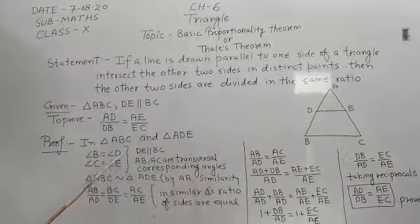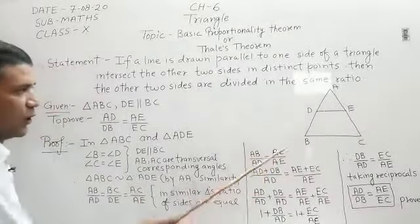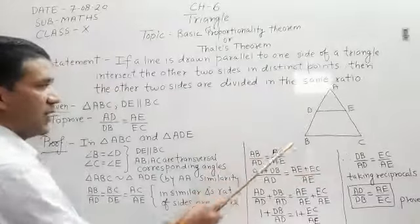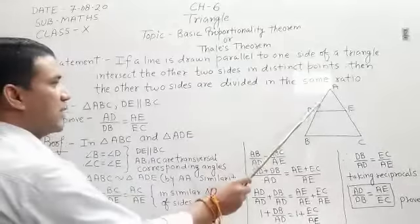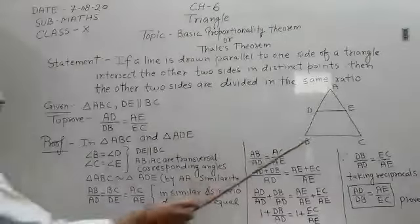Angle B is equal to angle D. This angle B is equal to this angle D because these two lines are parallel lines and AB is transversal, and you know when a transversal intersects two parallel lines the corresponding angles are equal. Similarly, angle C is equal to angle E.